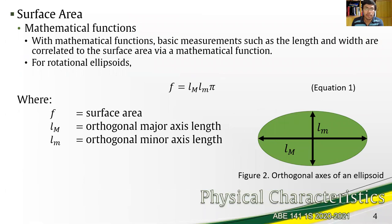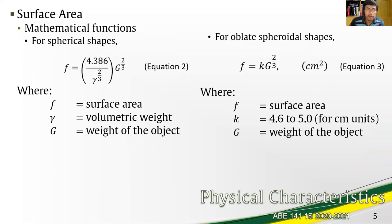Surface area determination using mathematical functions relates different parameters of biologically-based materials using a formula. For example, with rotational ellipsoids, the orthogonal axis lengths of the material are used in equation one, where the lengths are multiplied along with pi to obtain the surface area value. The same applies to other material shapes. For spherical shapes, we have equation two, where the weights of the material are used to get the surface area value.